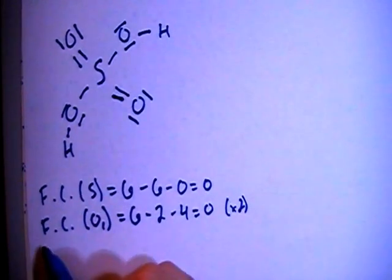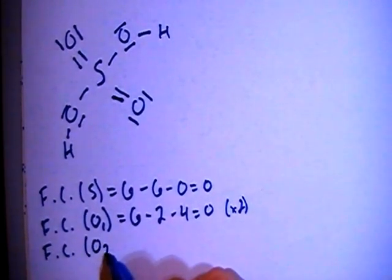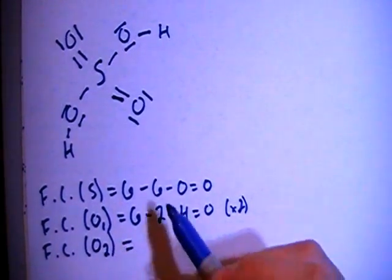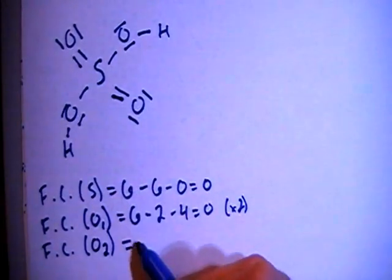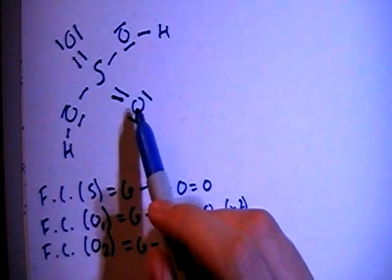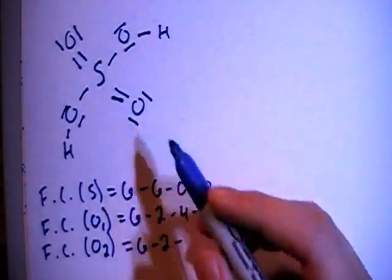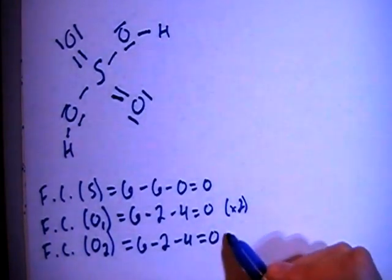The formal charge of oxygen with a double bond rather, so O sub two. We can do this one and this oxygen here, both of those. There's six valence brought in, minus one, two bonds for each one, minus one, two, three, four non-bonding, for a total of zero. And there's also two of those.